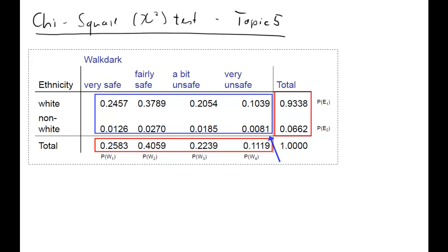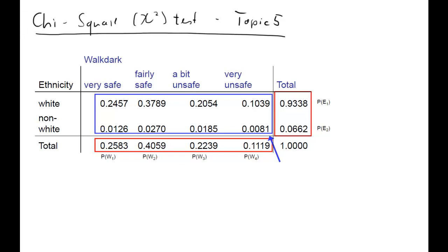In this clip I'm going to work through the chi-square testing example of topic 5, testing for categorical relations. We have two random variables that come from the British Crime Survey. One question is how safe people feel if they walk in the dark, and the other question is what ethnicity they come from. These are collapsed categories - white and non-white. There were a number of non-white categories, but we collated them because there are not many responses.